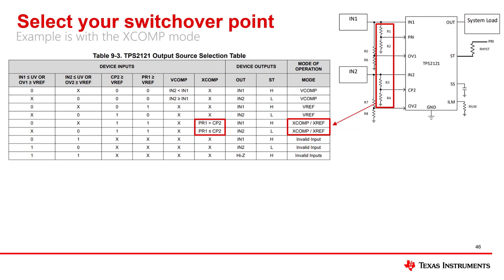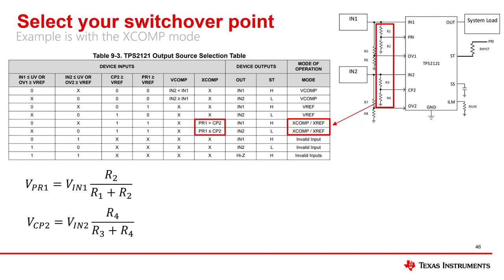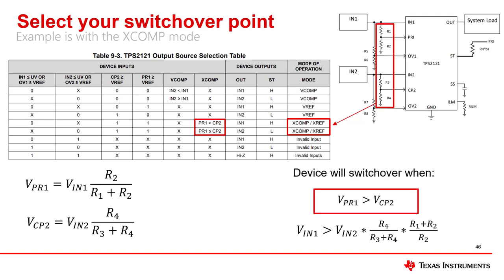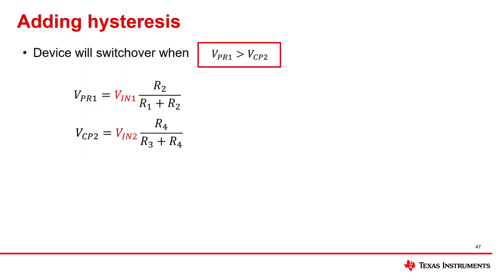Let's discuss how to calculate the correct switchover point based on these two voltage divisions. Because the device will switch over when the voltage on PR1 is greater than the voltage on CP2, we need to calculate the voltage division on both nodes and isolate VN1. This equation will help you solve for the correct switchover point between VN1 and VN2. Something to consider in this mode is that if you have unstable input voltages and/or a strong load, you should consider adding hysteresis, because the PR1 and CP2 equations have a direct relation to VN1 and VN2.